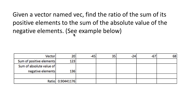Next problem: given a vector named vec, find the ratio of the sum of its positive elements to the sum of the absolute value of the negative elements. For example, with a vector 20, minus 45, 35, and so on, the sum of the positive elements is 123 — that is 20 plus 35 plus 68. The sum of the absolute values of the negative elements is 45 plus 24 plus 67, which is 136. So the ratio is 123 divided by 136.